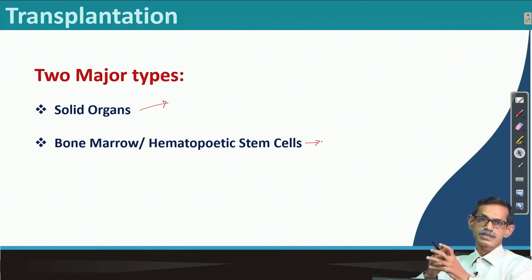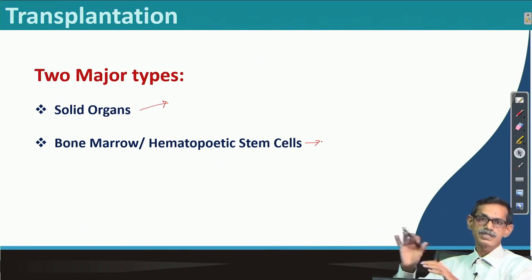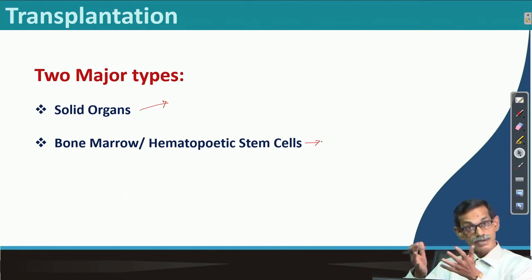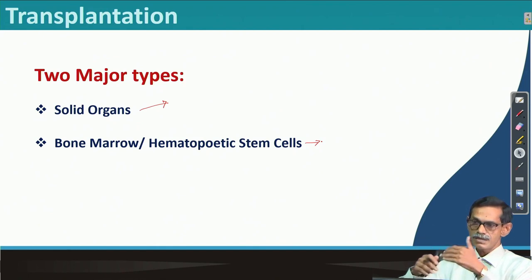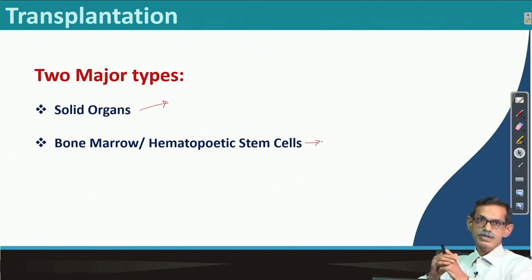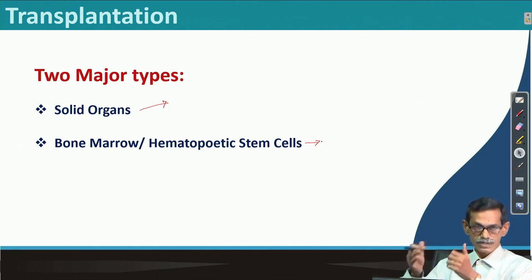If every other organ is perfectly fine but the kidney is not working, the whole body will collapse with time — so we need to transplant the kidney, or in some cases the heart, or the liver. Any kind of organ transferred from one particular person, the donor, to the recipient is called transplantation, and we will see how the immune system reacts in that case.